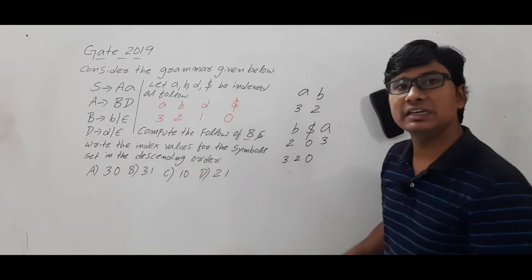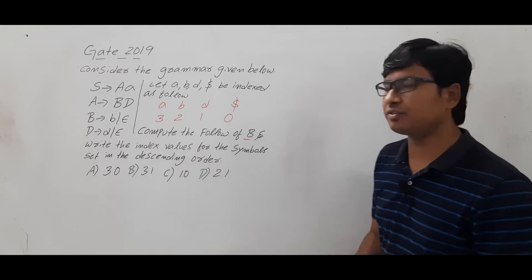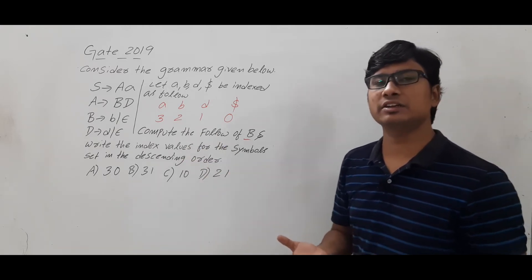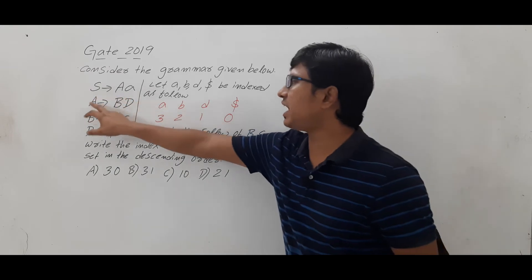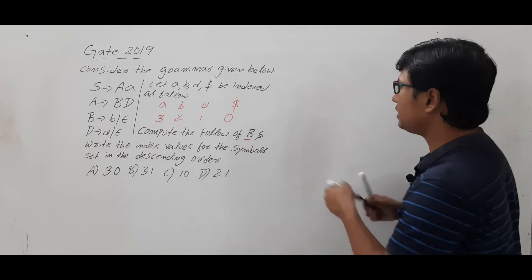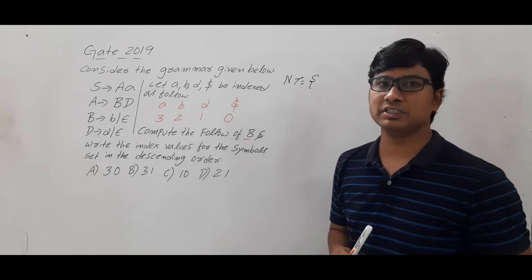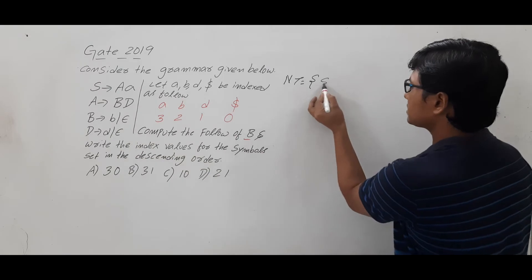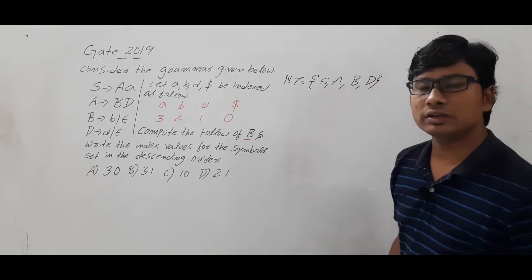Whenever we need to compute the Follow or First of any grammar, we first need to identify the non-terminals and terminals. The non-terminals are the symbols on the left-hand side of the productions. In this grammar, S, A, B, and D are the non-terminals.